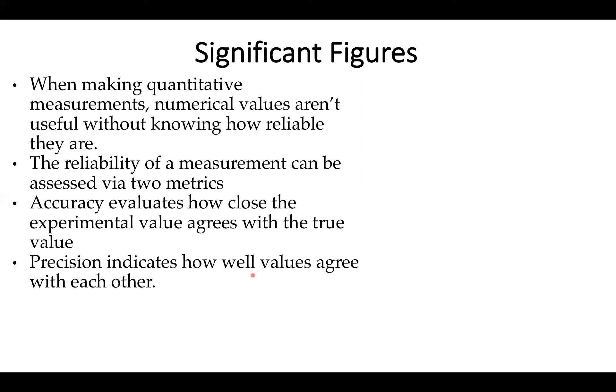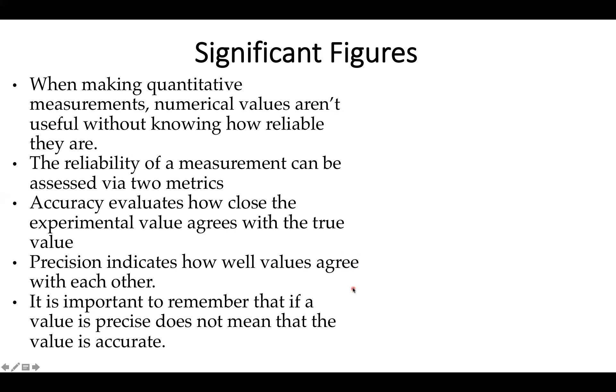The other one is precision. And this comes into play when we're making multiple measurements. And this is based on how well the values agree with each other. Part of the problem is if we don't know what the true value is, we often are only given information about precision. And these two don't always have to be related. Just because a value is precise doesn't mean that it's accurate.